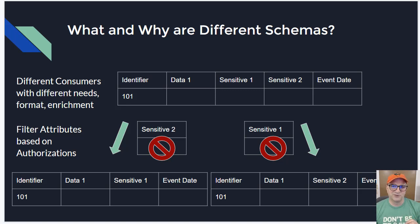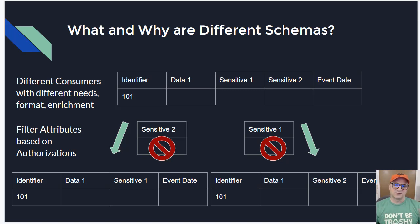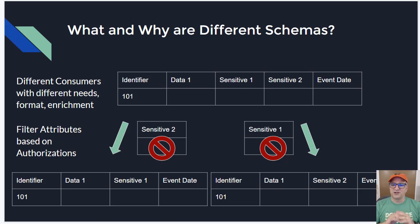This is similar to what we do with views in a relational database — we may have different consumers with different needs. Some may need an enrichment or set of codes that looks one way, and some may need it to look another way. Another reason is we may filter columns in the data set based on sensitivity attributes. Two of the four data columns have sensitivity, so there might be four different pools of users: those who can see no sensitive data, those who can see sensitive field one, those who can see sensitive field two, and those who can see everything.